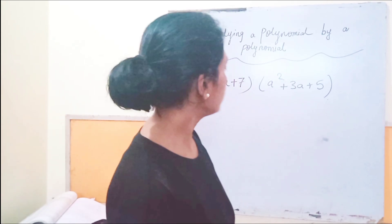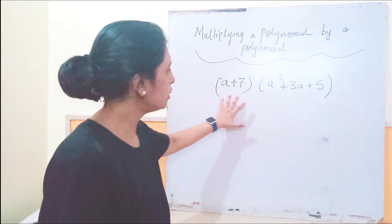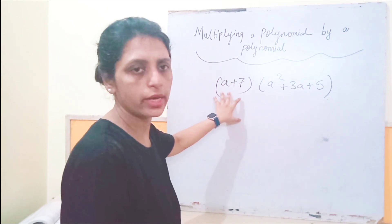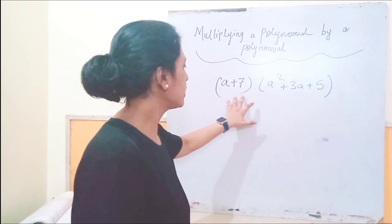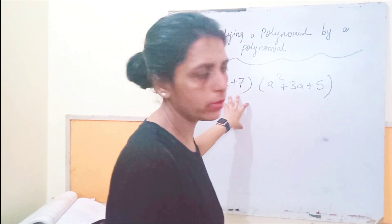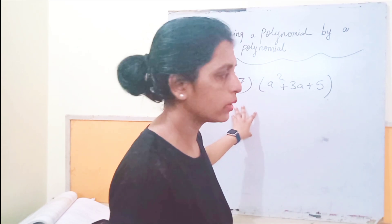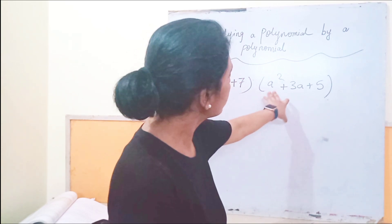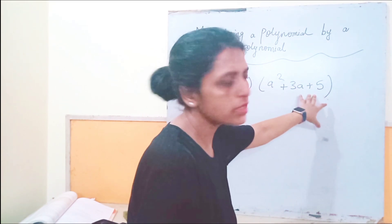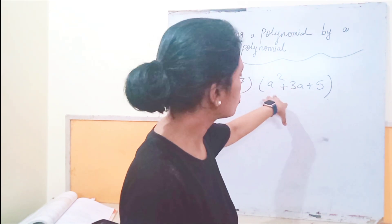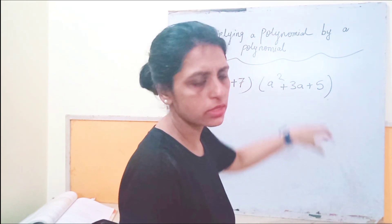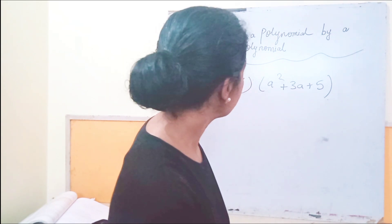Children, now I have got one example. Here I am going to multiply this binomial a plus 7, a plus 7, a plus 7 having two terms, that is when it is a binomial or you can call it as a polynomial also, multiplied with a squared plus 3a plus 5. This is a trinomial, okay, because it is having three terms.